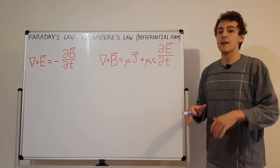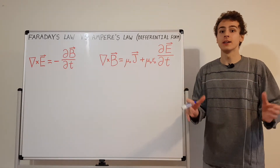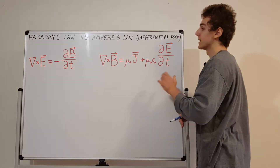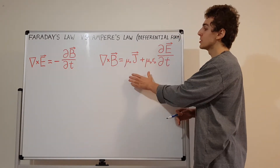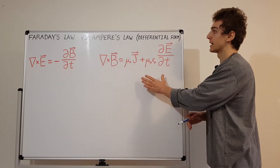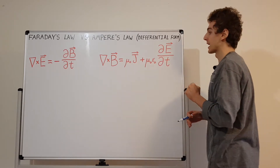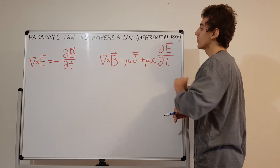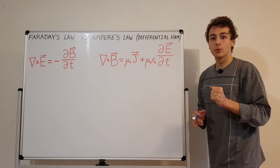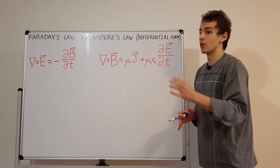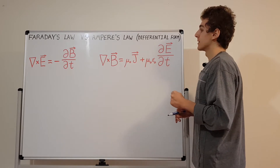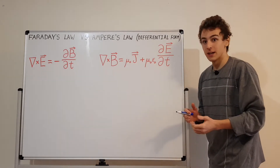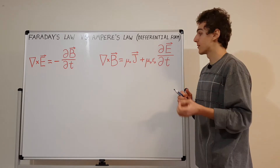Faraday's law of induction is the one on the left-hand side, and Ampere's circuital law is on the right — and it also includes Maxwell's modification, which is the displacement current term. Ampere recognized that currents cause circulations of magnetic fields, and Maxwell recognized that changing electric fields can do the same thing.